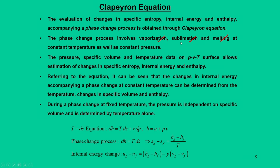Looking at the TDS equation: dH = TdS + VdP. Since it is a property equation, it is applicable for all processes, whether reversible or irreversible. For a phase change process, temperature and pressure do not change, so dP equals zero and the second term vanishes. The equation simplifies to dH = TdS.